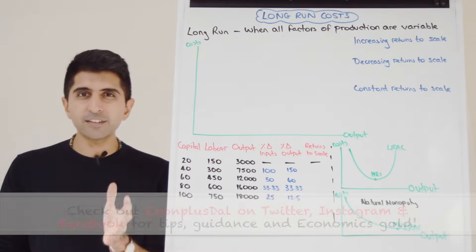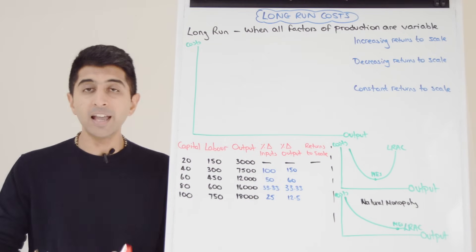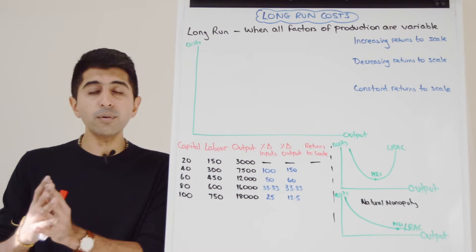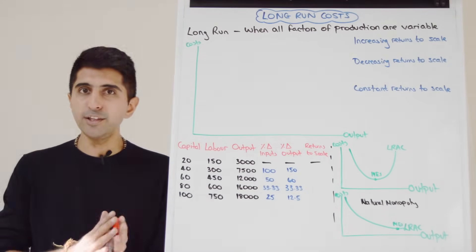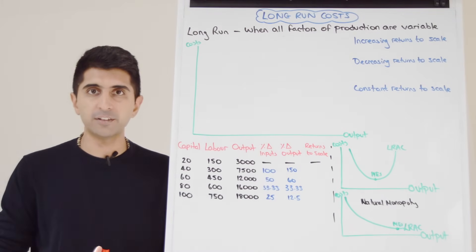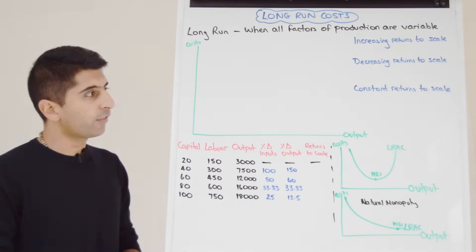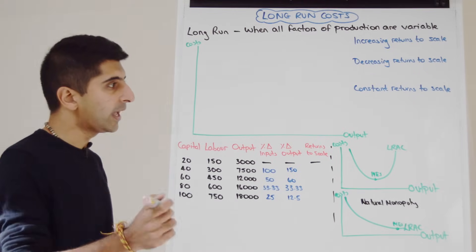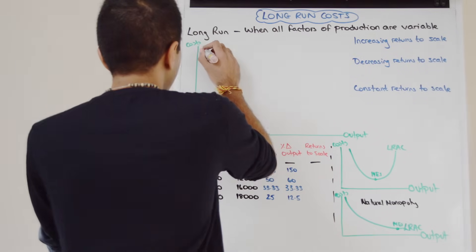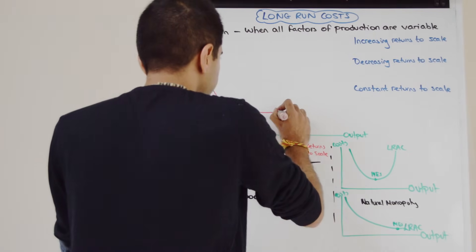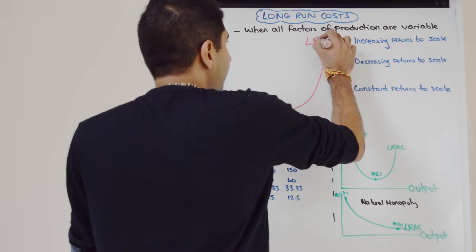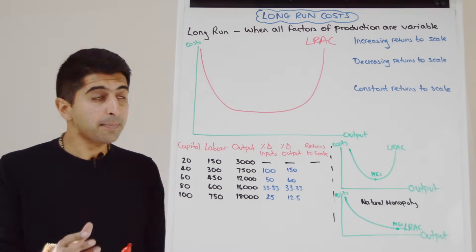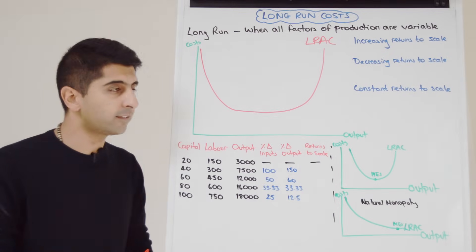The long run consists of lots and lots of different short runs. Initially a business is confined by fixed factors of production, but eventually they can increase their factors of production, then they're confined again by a new level of fixed factors until they can increase again. So when we join up all those short run positions we end up with a long run average cost curve. That is the key cost curve you need to know in the long run.